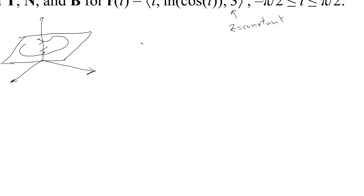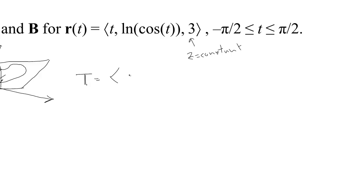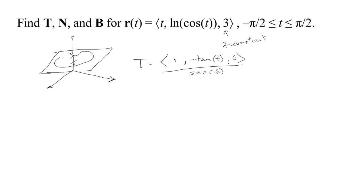Since this is a plane curve, let's look at T again. It turned out to be (1, minus tan t, 0) divided by the secant of t, since 1 plus tangent squared is secant squared, and the square root of secant squared is the secant (positive in this range). So we ended up with T = (cosine t, minus sine t, 0).